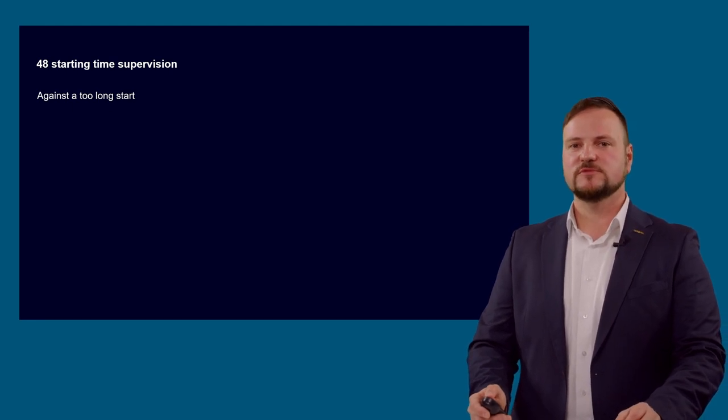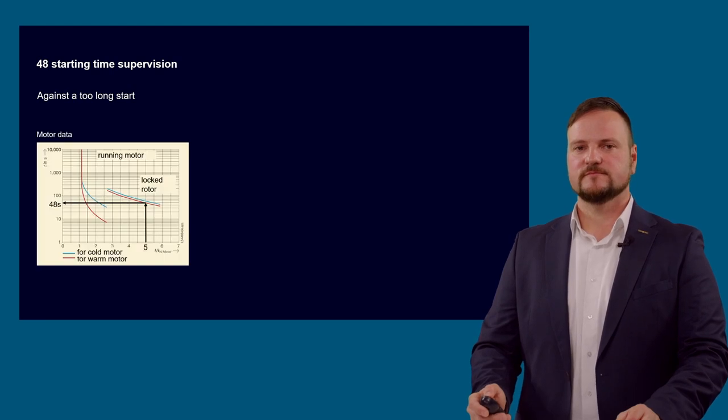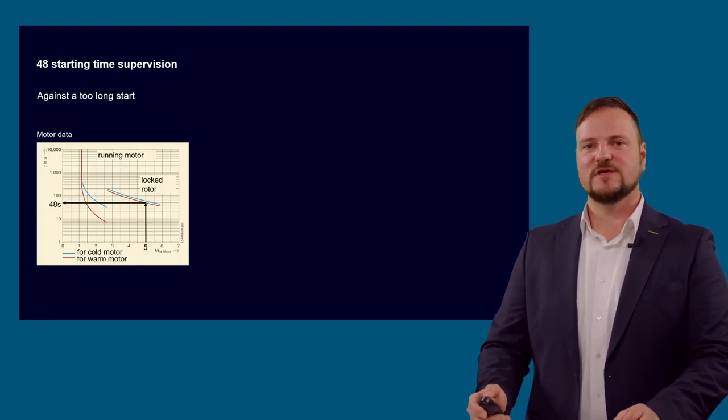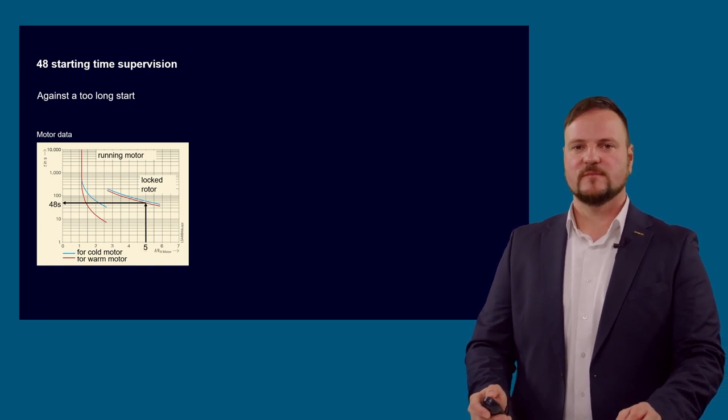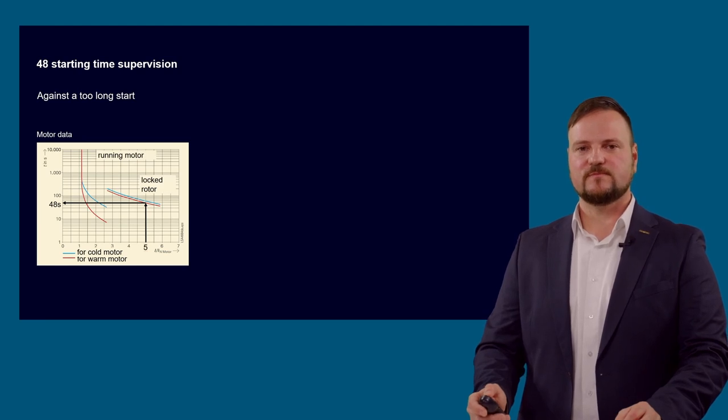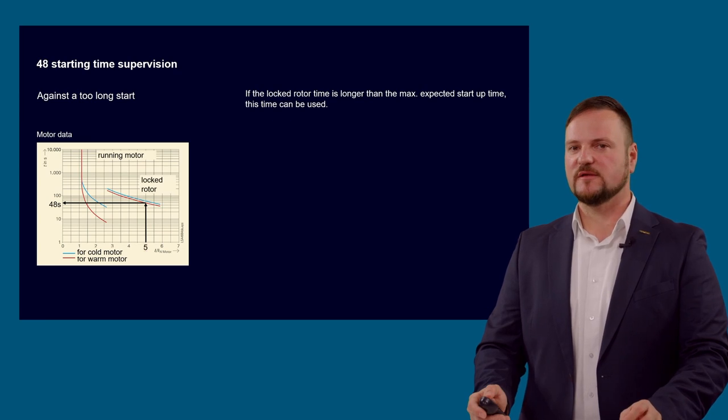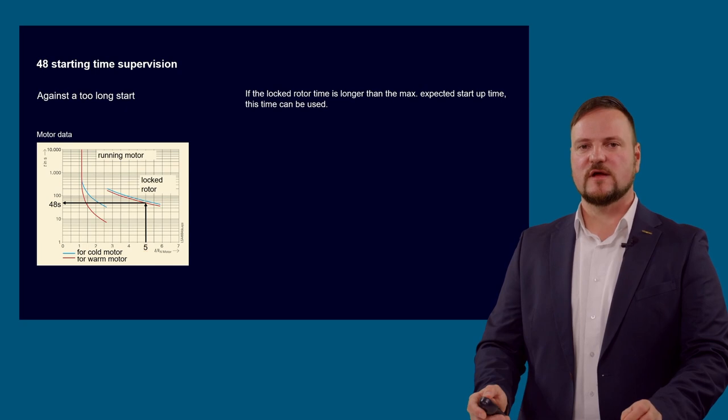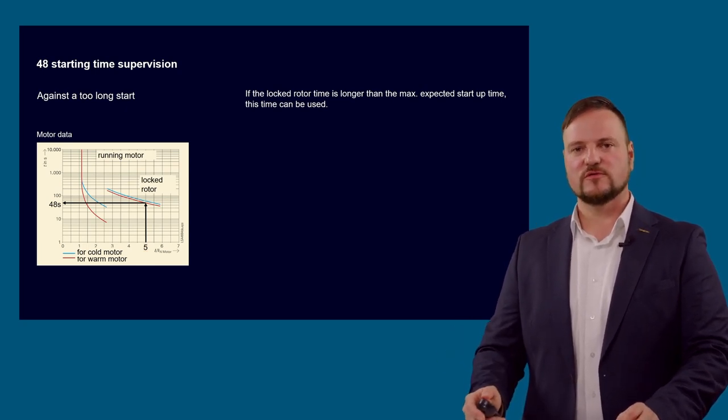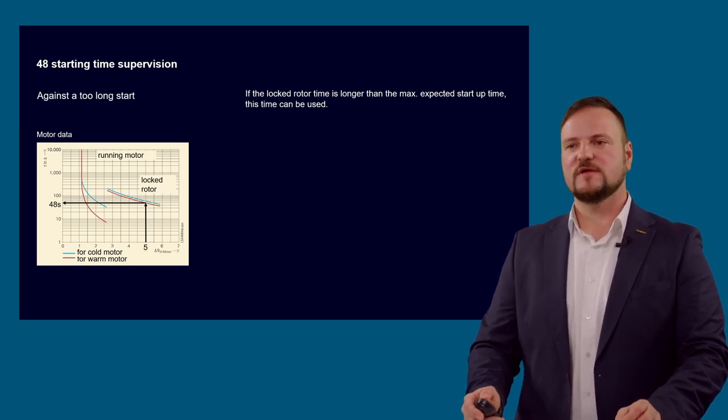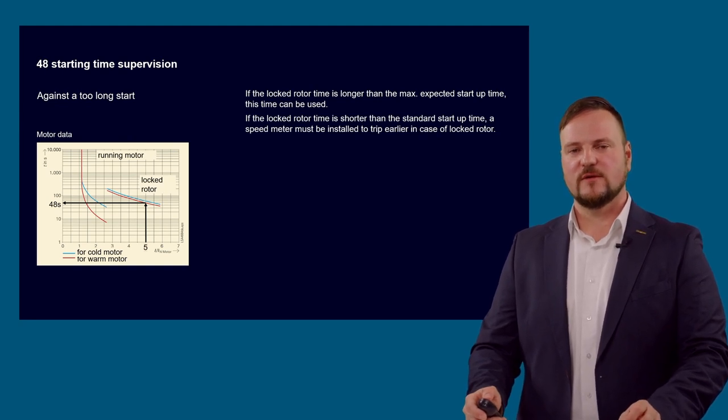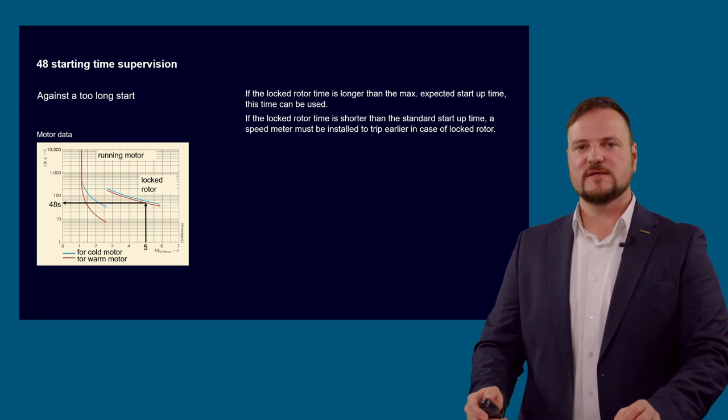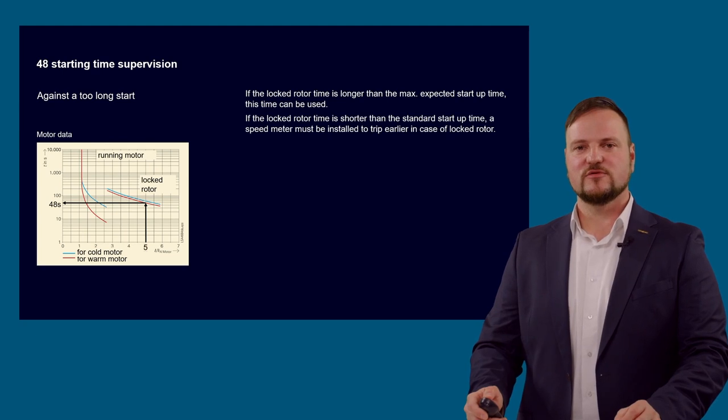Different from the restart inhibit function, the starting time supervision monitors a too long startup of the motor. The motor data usually make a difference for the startup from the cold to the warm start. In the motor diagram we can see two curves, the blue for the cold one and the red for the warm start, for the maximum locked rotor time. These curves are given in the right part of the diagram. If the locked rotor time is longer than the maximum expected start time, this time can be used simply because during startup of the motor, the rotor is moving and being cooled and the startup current is decreasing. If the rotor is locked in that time, then we can react faster and we have a standard startup time. A speed meter must be installed to trip earlier in that case, and this signal can be registered by the binary input.